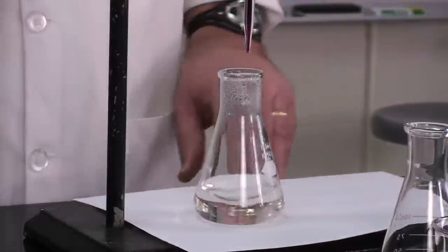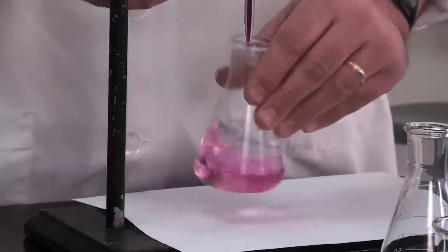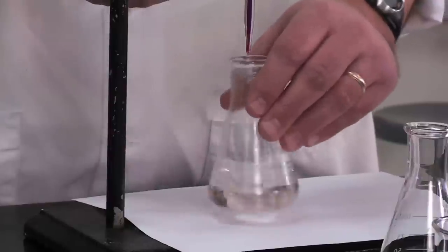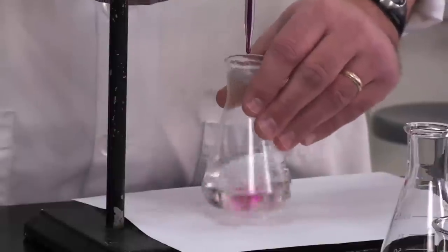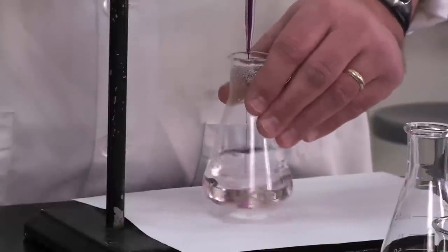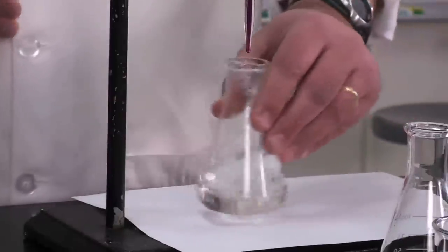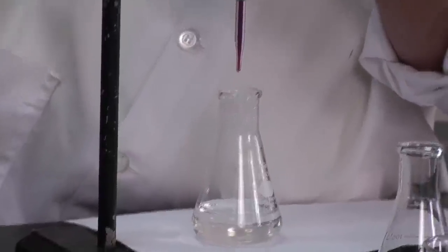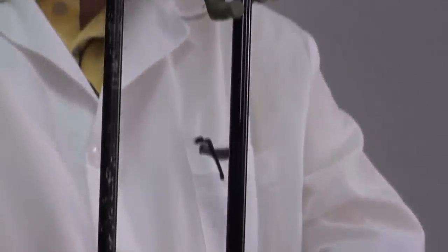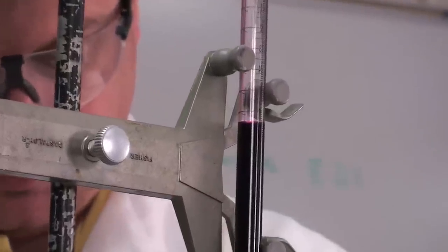Now it seems to me that pink color is starting to take a little bit longer to disappear than it had been previously. So at that point we want to be careful and slow down because that means we're starting to approach the endpoint of the titration. Judging by our volume here, we're now down to about 26.5 milliliters. That's pretty close to the 20 milliliter target I told you was going to be the ballpark answer. So we want to start going pretty slowly here, perhaps a drop at a time.